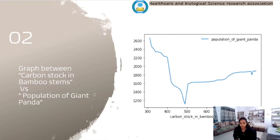In Figure 2, we have the graph between carbon stock in bamboo stems and the population of Giant Pandas. The data of carbon stock in bamboo stems is on the x-axis in TGC units — a teragram of carbon equal to 10¹² grams. We can see that carbon stock in bamboo stems increases with a decrease in Giant Panda population. Carbon stock in bamboo increases because of rainfall, and when rainfall is high the harvest will be good, but excessive rainfall causes seasonal diseases in Giant Pandas. So carbon stock in bamboo stems indirectly affects the Giant Panda population.